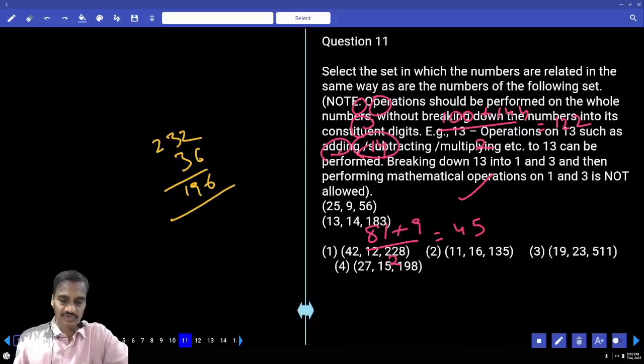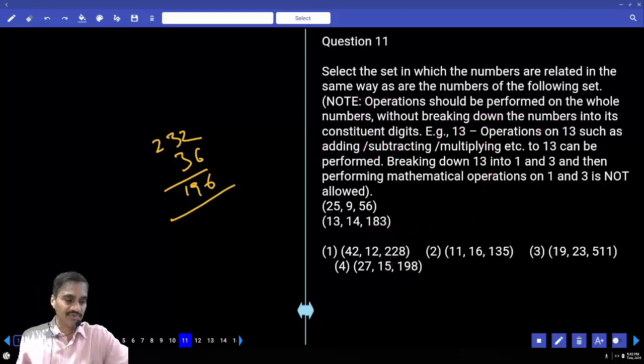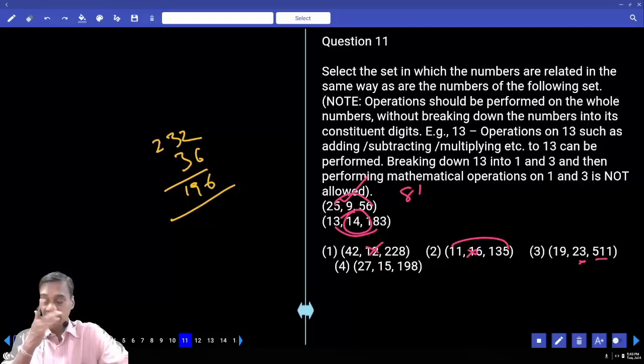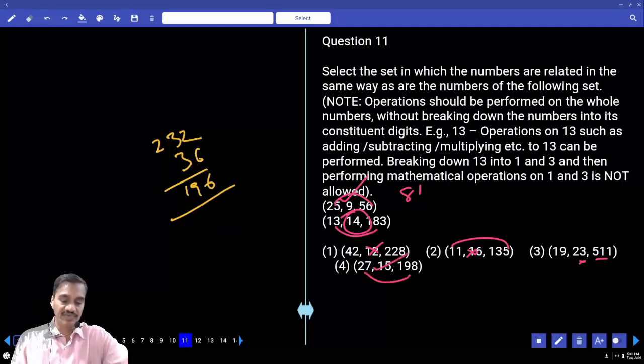Question eleven: 25+56, sum is 81, which is 9 square - the square of the middle number. 13+183 is 196, which is 14 square. Similarly check: 42+228 is not equal to 12 square. 135+11 is not equal to 16 square. 27+198 is 225, which is 15 square. Choice four, the set (23, 9, 511).